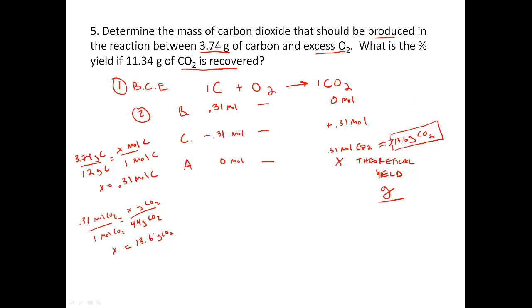The problem is, in the real world, you're never going to get 100% of what you think you're going to get. The question is, what is the percent yield if 11.34 grams of CO2 is recovered? If you want to find the percent yield, you need to take the actual yield, put it over the theoretical yield, and multiply by 100%. Let's plug into this. My actual yield, which is what they give me in the problem, is 11.34 grams. My theoretical yield is 13.6 grams. In the end, I'm getting 83% yield.